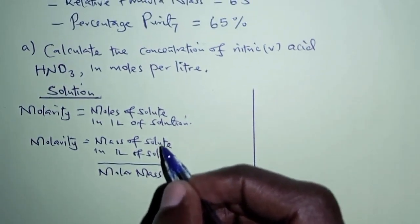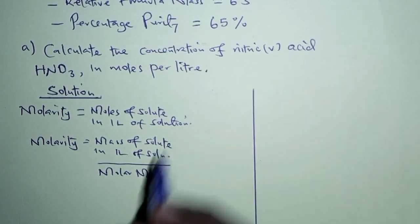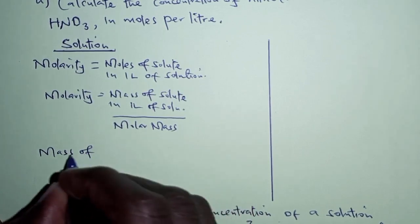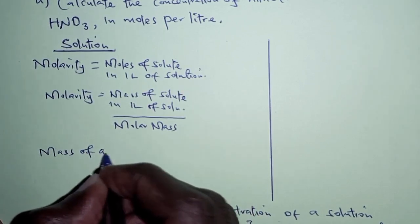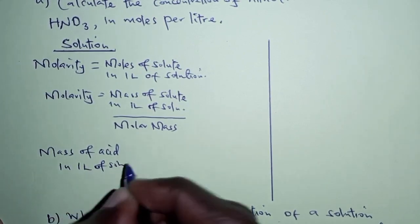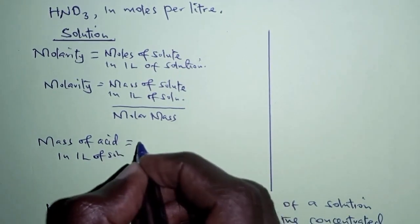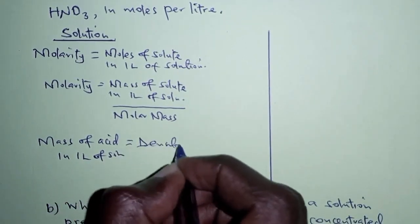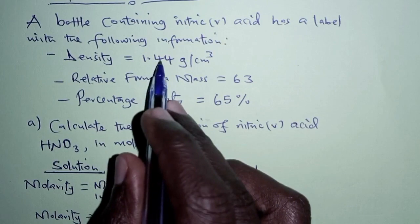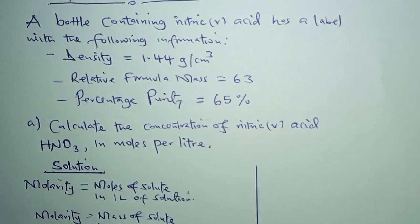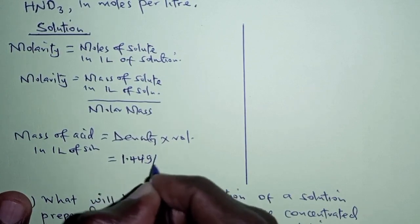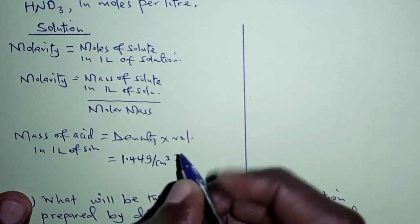The mass of the solute — that is, the mass of acid — in one liter of solution is given by density times volume. The density we are given is 1.44 grams per cubic centimeters, and we multiply by the volume.